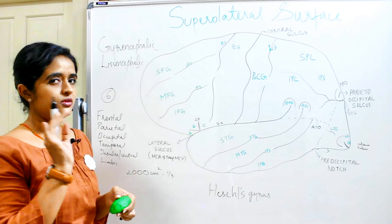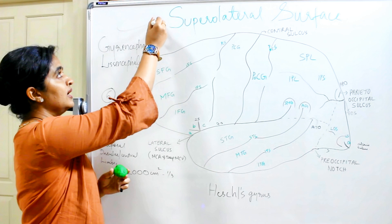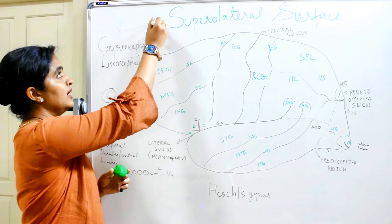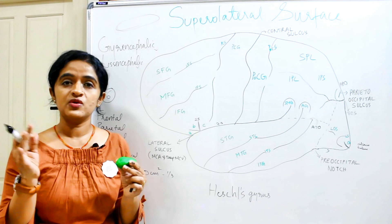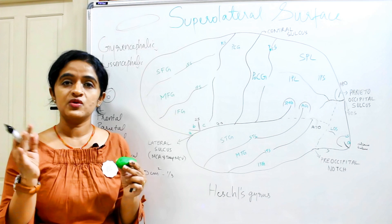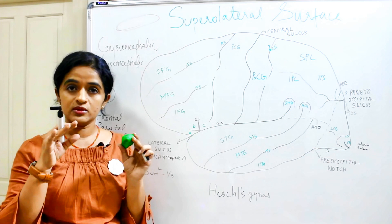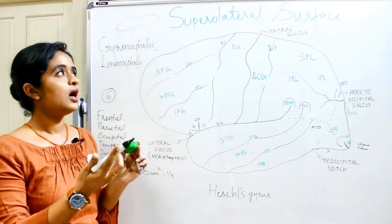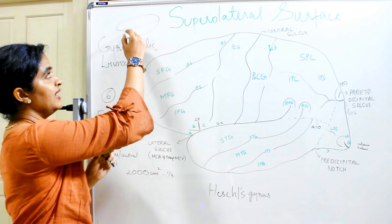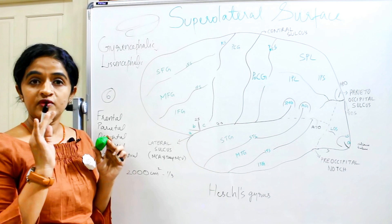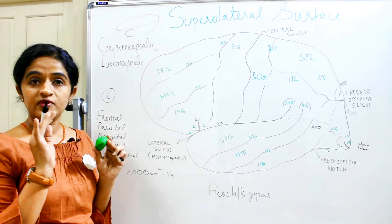During development, the cerebrum starts as an elongated structure with an anterior end and a posterior end. Over time, it gets convoluted in order to be accommodated into the cranial cavity, which is a fixed space. The brain folds on itself, causing the posterior end to shift anteriorly.